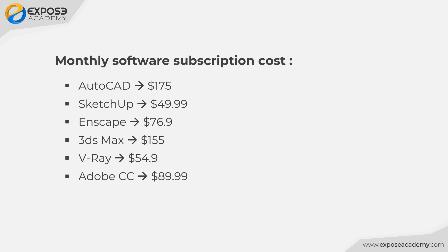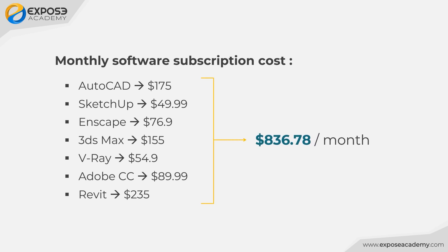then V-Ray at $55.90 per month, Adobe Creative Cloud subscription to be able to use Photoshop and Premiere Pro for $89.99 per month, and finally Autodesk Revit subscription at $235 per month. The total cost you have to pay per month is $836.78. For many people in the world, this is a huge amount of money to pay each month.